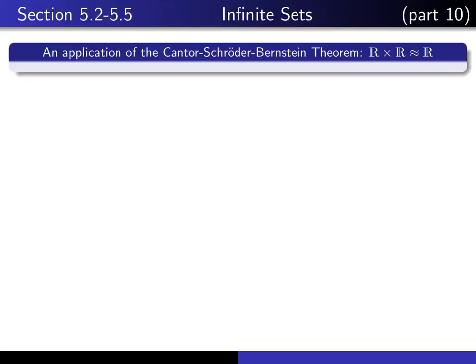This is part 10 in our series of lectures on infinite sets. In this lecture, we're going to give an application of the Cantor-Schröder-Bernstein theorem. Namely, we're going to prove that R² and R have exactly the same cardinalities.